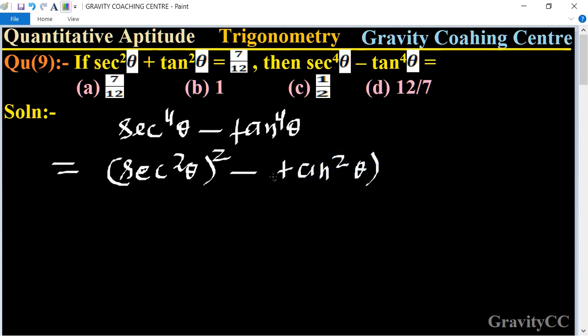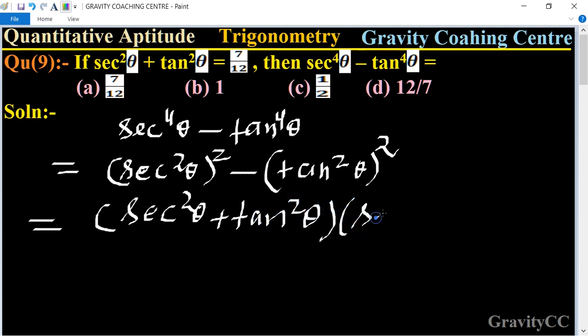Now we use the identity a² - b², so its formula is (a+b)(a-b). So it will become (sec²θ + tan²θ) times (sec²θ - tan²θ)